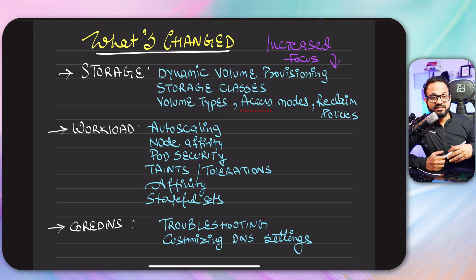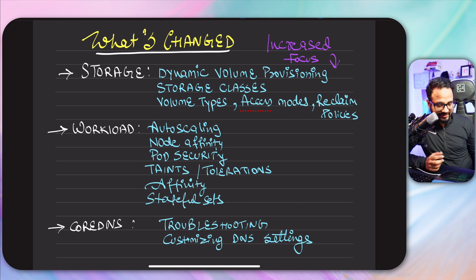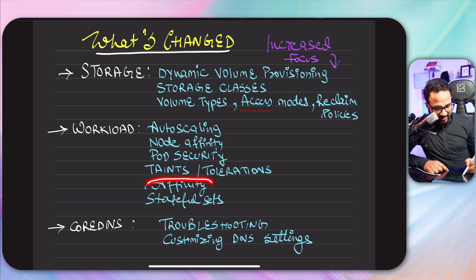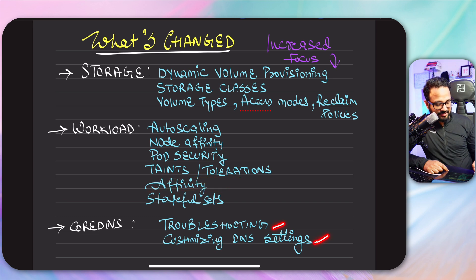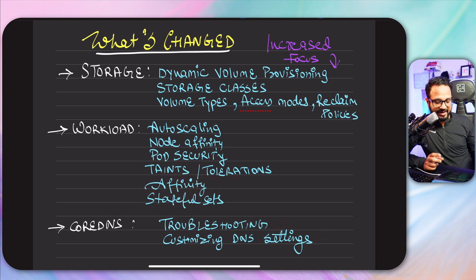For most of these, I have already covered them in my series — for example, auto scaling, node affinity, taints, tolerations, affinity. I've added it twice. DNS troubleshooting — these are the topics that I've already added.